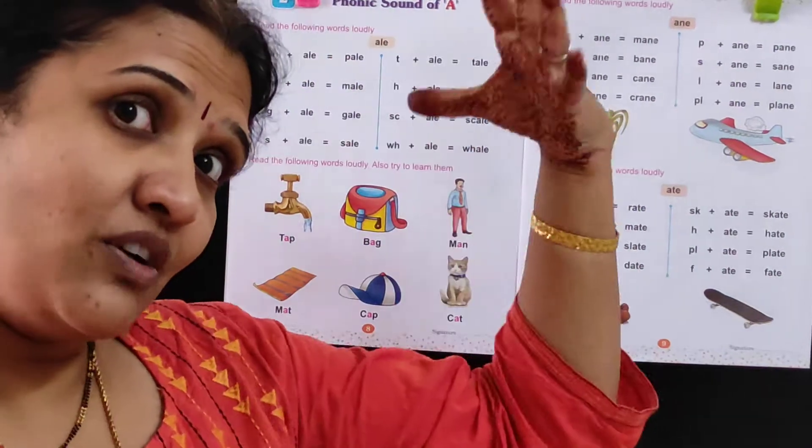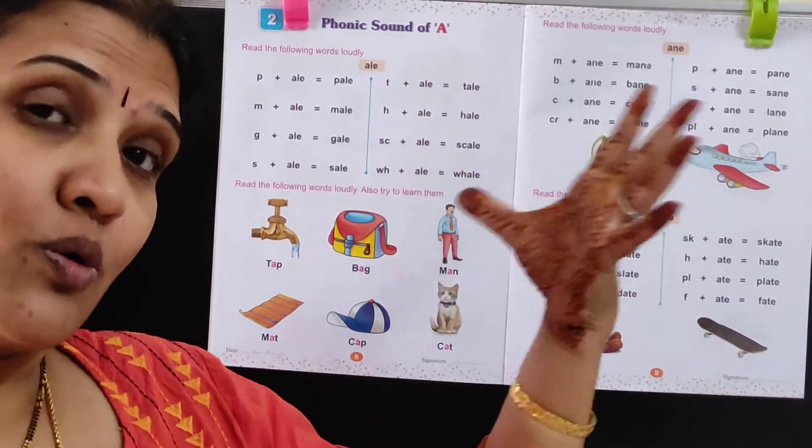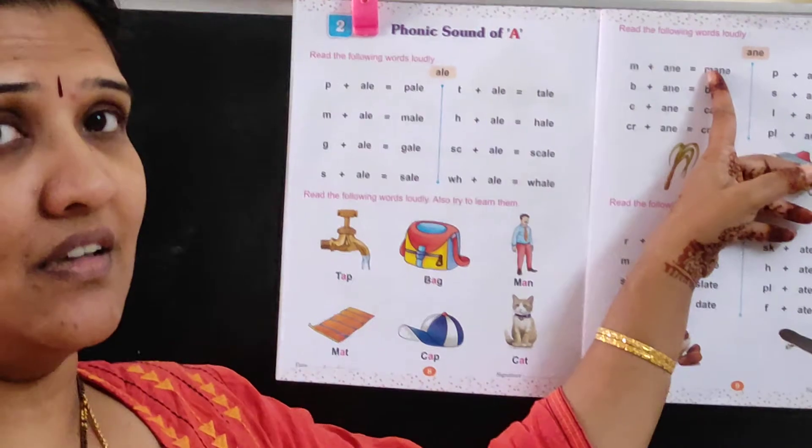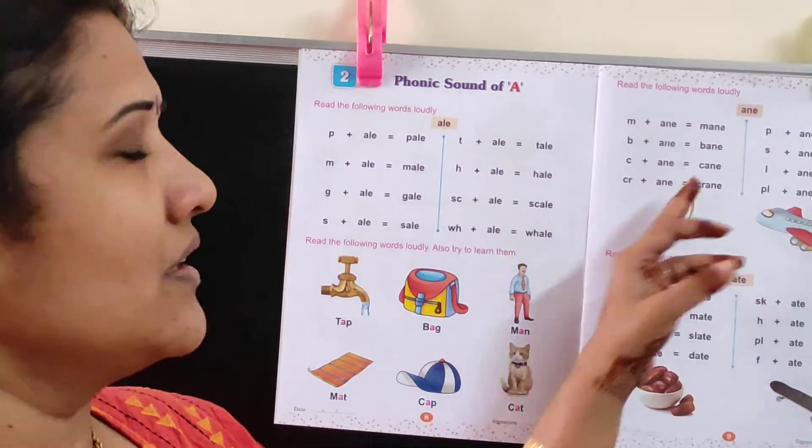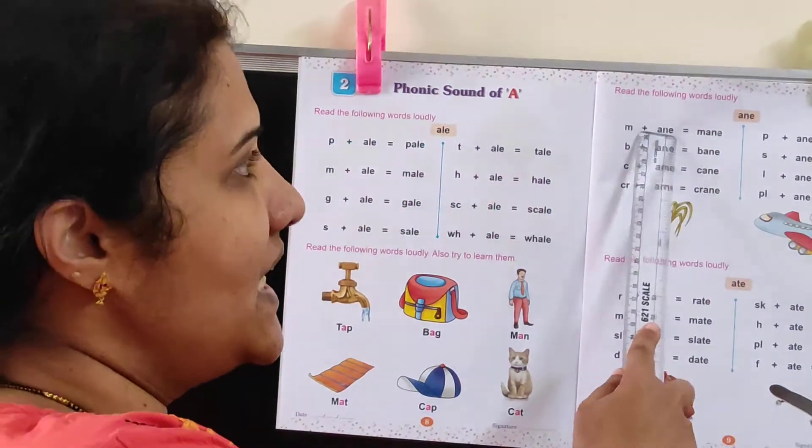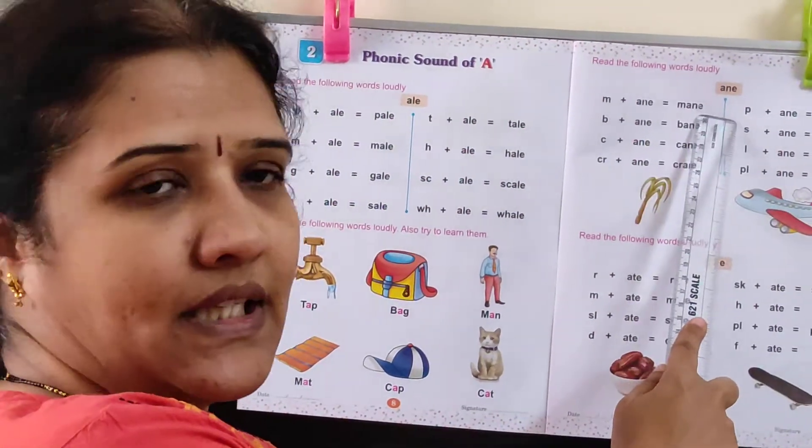Lion has got very very hairs. So many hairs it has got. That is called Mane. Lion's hairs, that is called a Mane. M-A-N-E.